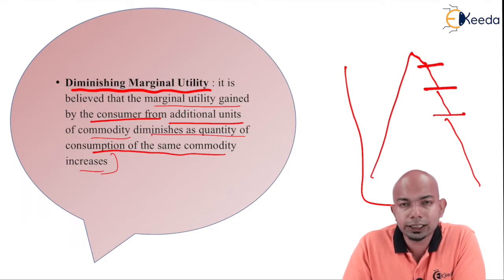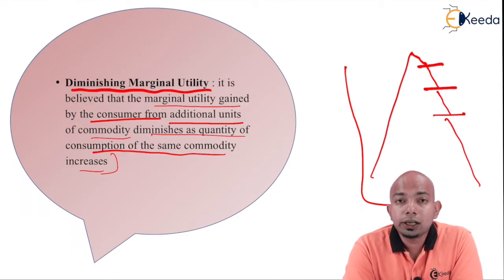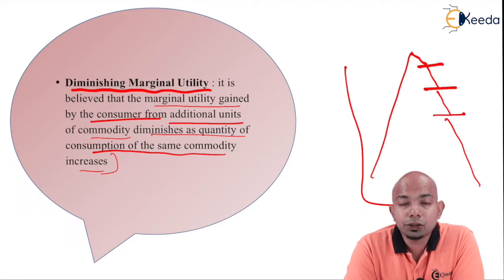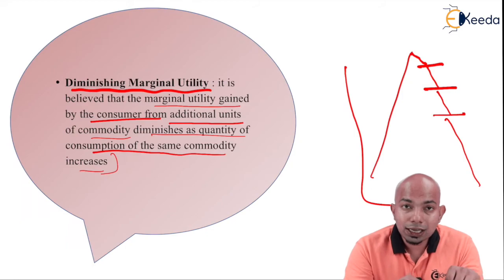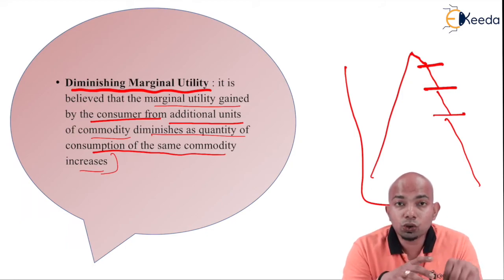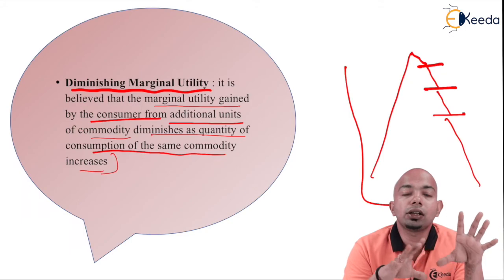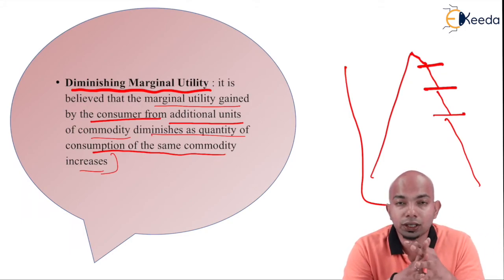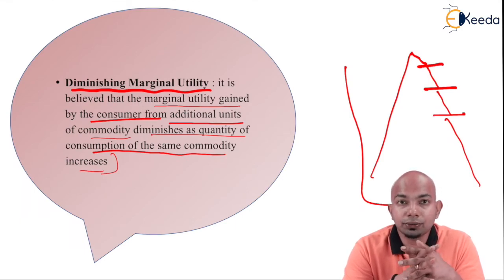There are certain exceptions for this law which we will study in the later part. This is all we need to understand when discussing the specifications related to cardinal utility analysis. These are the assumptions on which the cardinal utility approach has been formed and derived. Thank you.